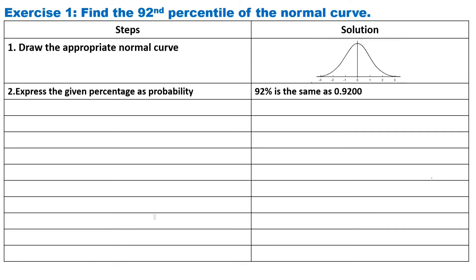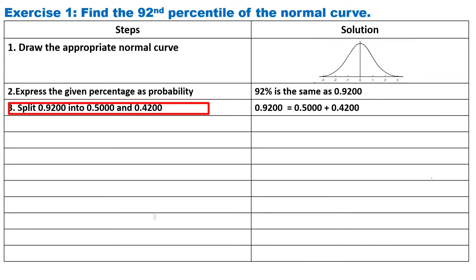Step two, convert the given percentage as probability. So, 92% is the same as 0.9200. Next, split 0.9200 into 0.5000 and 0.4200. So, we have 0.9200 equals 0.5000 plus 0.4200.